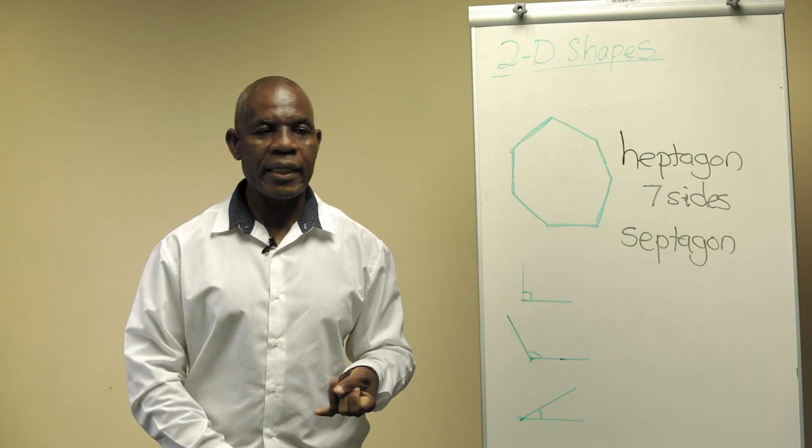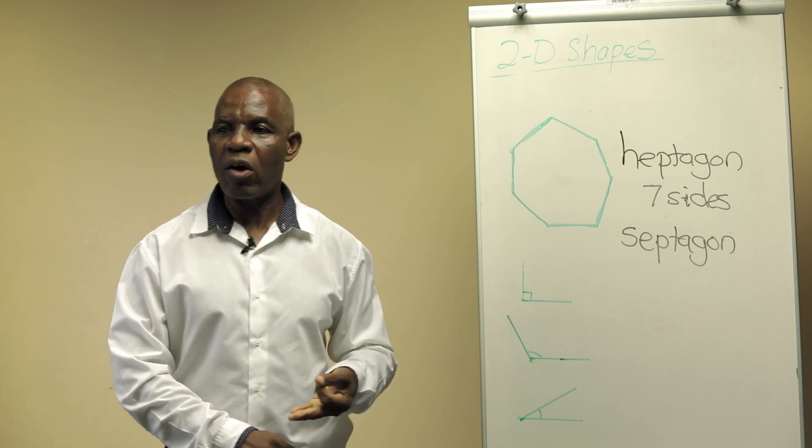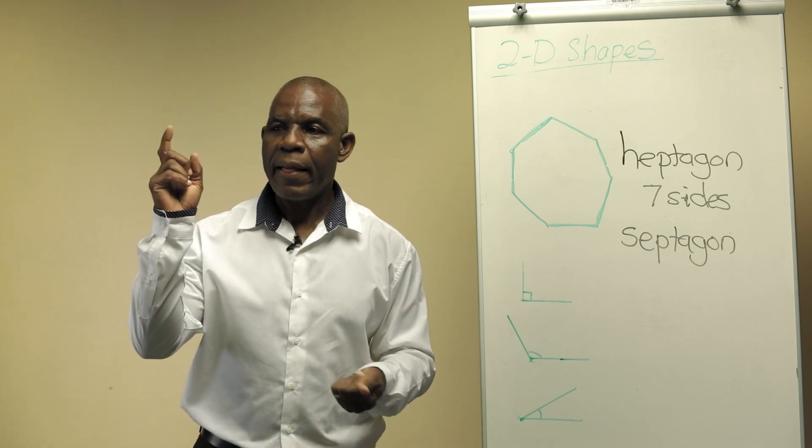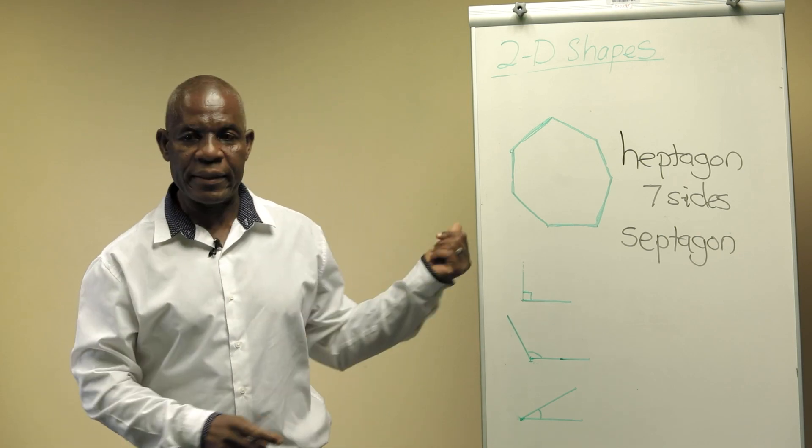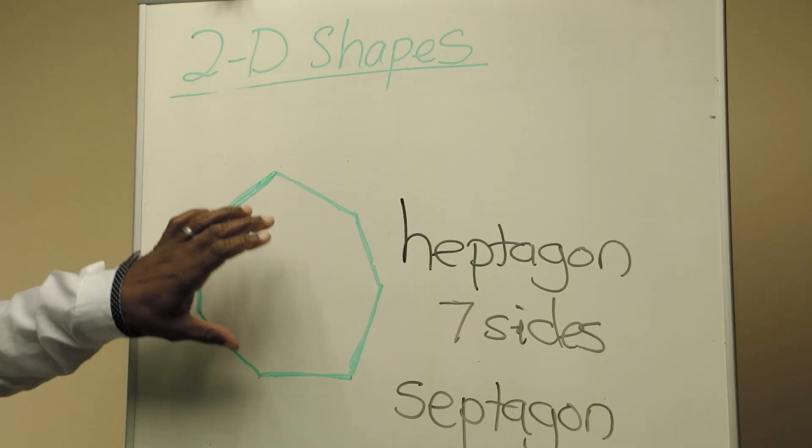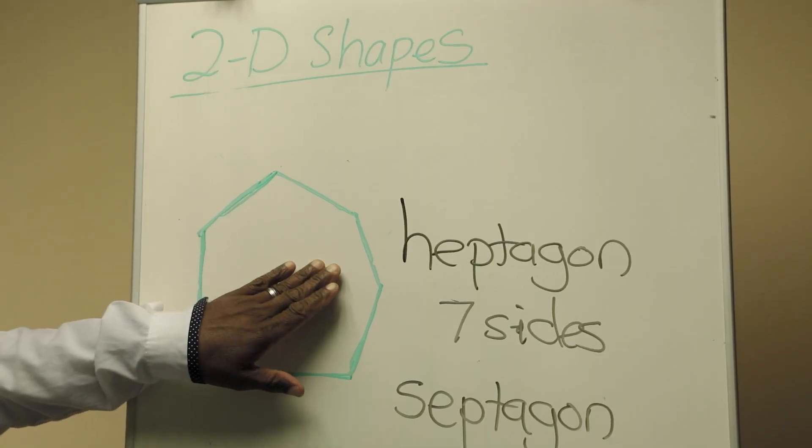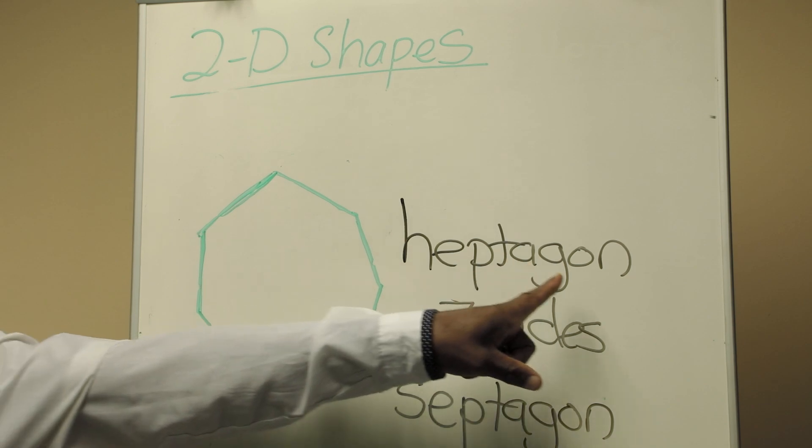Those are triangles, rectangles, squares, pentagons, circles. There is this one new 2D shape that I want you to know about. It's called a heptagon,